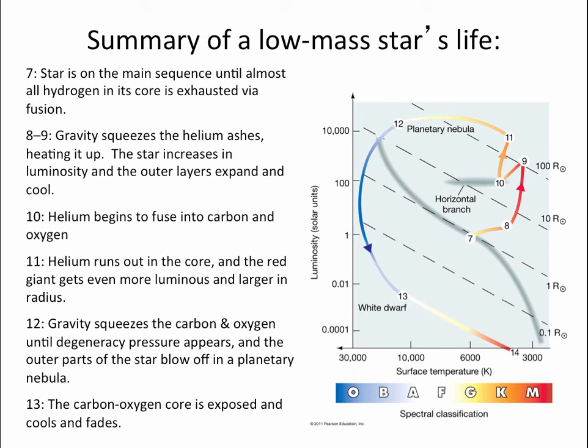Now, once it gets to a large red giant, gravity can finally squeeze the core enough that helium fusion can begin, and the helium begins to form carbon and oxygen. At this point, the star shrinks a little bit, gets a little bit hotter, but it very quickly runs out of helium.